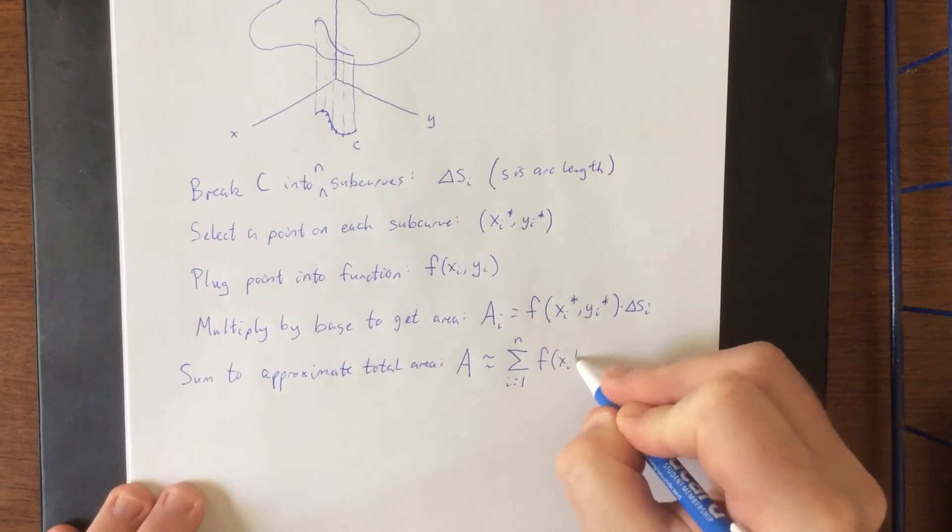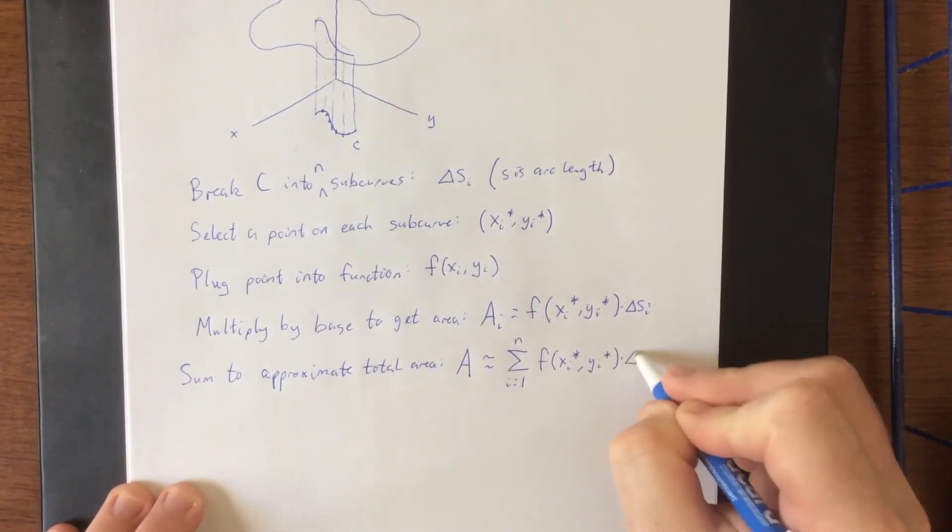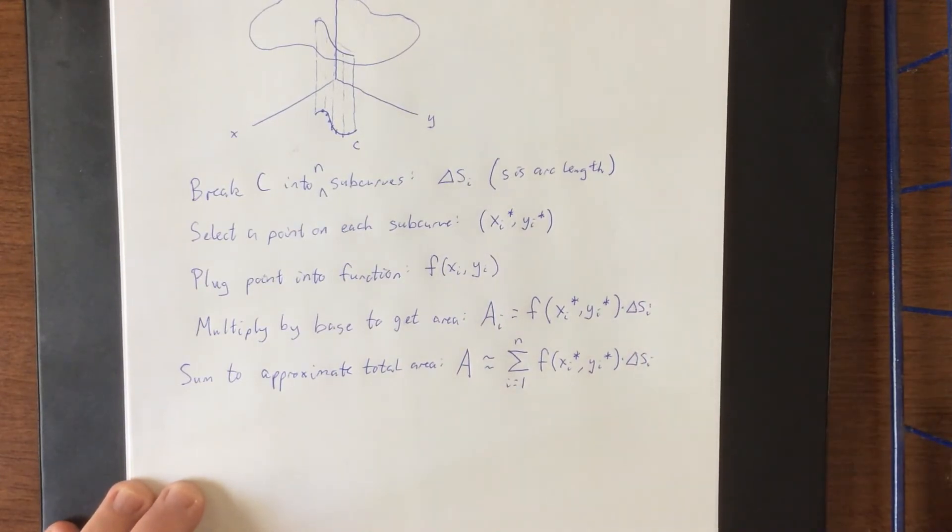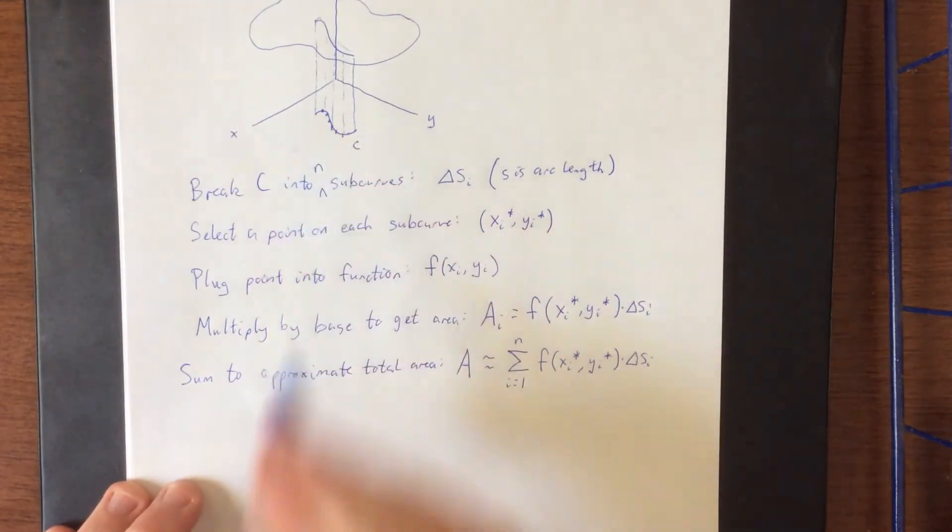...f of x sub i star y sub i star times delta s sub i. Now the reason that the arc length is also indexed is that it doesn't necessarily have to be consistent along the curve.